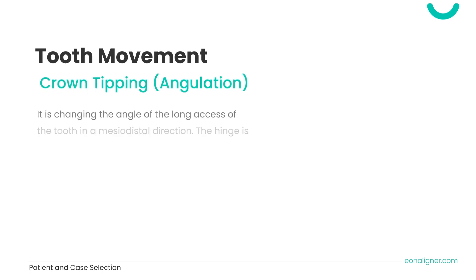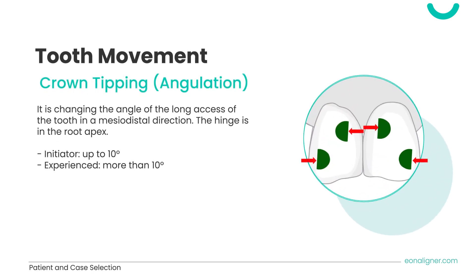Crown tipping, or angulation, is changing the angle of the long axis of a tooth in a mesiodistal direction; the hinge is in the root apex. For initiators, up to 10 degrees is easily achieved; more experienced users can achieve more than 10 degrees. Incisors have the most predictable mesiodistal tipping compared to canines, premolars, and molars. It is better to add attachments on the teeth to ensure predictability of the movement.